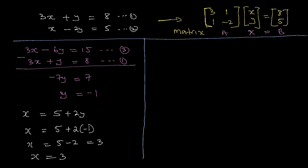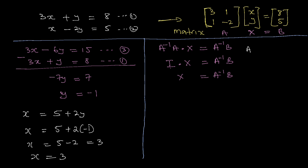To find x, we multiply both sides on the left by the inverse of a: inverse of a times a times x equals inverse of a times b. Since inverse of a times a is I, we get I times x equals inverse of a times b, so x equals inverse of a times b. For a 2 by 2 matrix, the inverse is one over the determinant of a times the adjoint of a. The determinant is minus 2 times 3 minus 1 times 1.